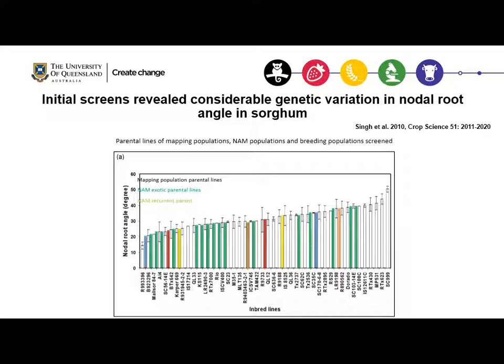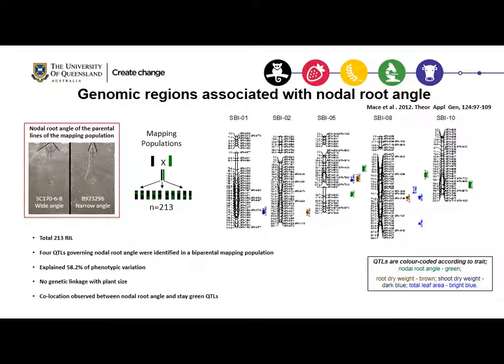Initially we screened around diverse sorghum lines including inbreds and hybrids, as well as parental lines of mapping populations, NAM populations, and breeding populations. We found significant genetic variation for nodal root angle, varying from 15 to 50 degrees. We then screened around 213 RILs and identified four QTLs — two on chromosome 5, one on chromosome 8, and one on chromosome 10. These QTLs explained 58% of the phenotypic variation, and while they had limited genetic linkage with QTLs for plant size, they co-located with QTLs for stay-green.